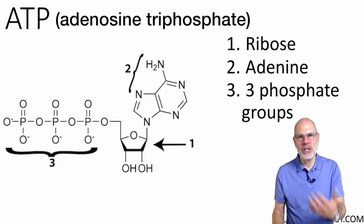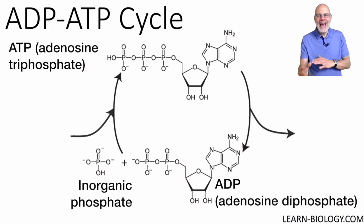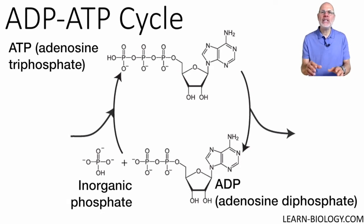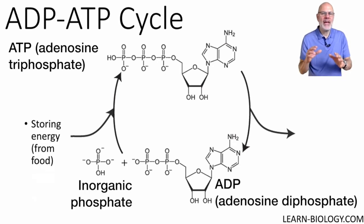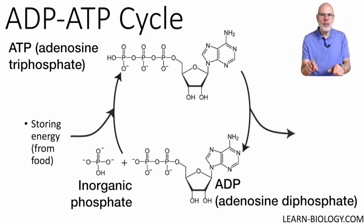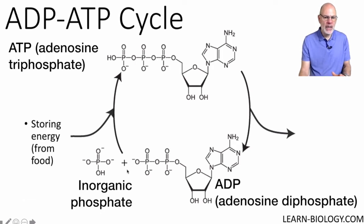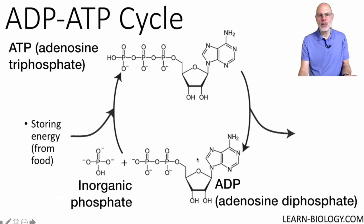ATP is really one of the central molecules of life. In terms of cellular respiration, that structure is all about energy. ATP is part of a cycle where it interacts with ADP and phosphate. ATP is adenosine triphosphate; its counterpart, ADP, is adenosine diphosphate. ATP is the high energy form; ADP and phosphate are the low energy forms.